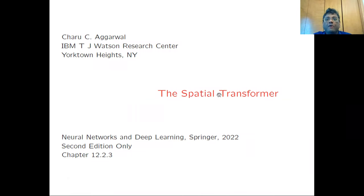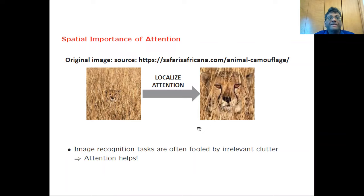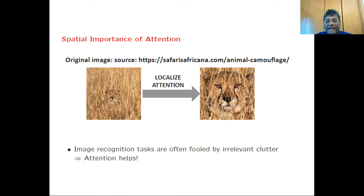In this video, I will be talking about the spatial transformer. The spatial transformer is a mechanism for incorporating spatial attention in images. To provide an example of the importance of spatial attention, I have shown an example of a cheetah which is camouflaged in the image on the left. By focusing on a relevant part of the image containing the cheetah, the resulting image becomes much easier to classify. This is because image recognition tasks are often fooled by the irrelevant clutter in the image, and attention helps focus the image onto portions that are more relevant for classification purposes.